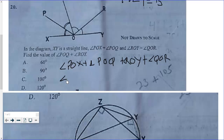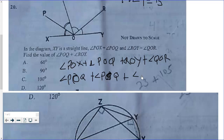So I am going to put angle POQ plus another angle POQ. Then another condition is that angle ROY is equal to angle QOR, so whenever I see QOR I am going to put angle ROY. So the equation becomes angle POQ plus angle POQ plus angle ROY.